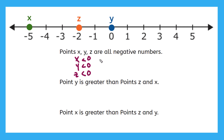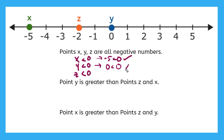X is equal to negative 5, so this is the same as negative 5 less than 0. Is that statement true? Yes. The next one says y is less than 0, and y is equal to 0. So this statement says 0 is less than 0. Is that statement true? No — 0 is equal to 0.